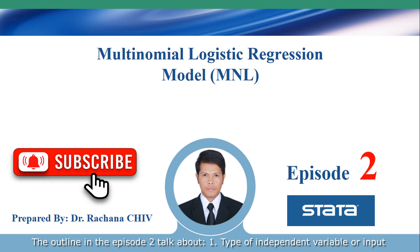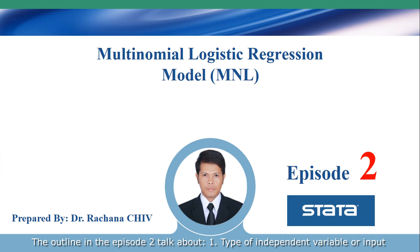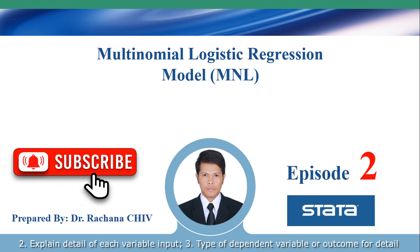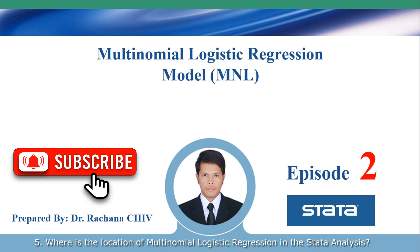The outline in episode 2 talks about: 1. Type of independent variable or input. 2. Explain detail of each variable input. 3. Type of dependent variable or item for detailed explanation. 4. What is a reference category? 5. Where is the location of multinomial logistic regression in the statistical software?